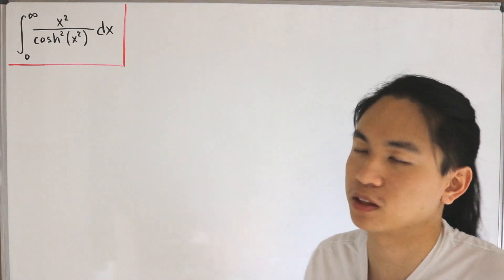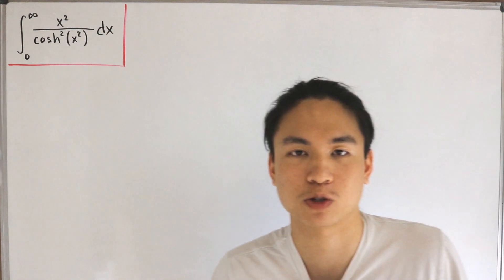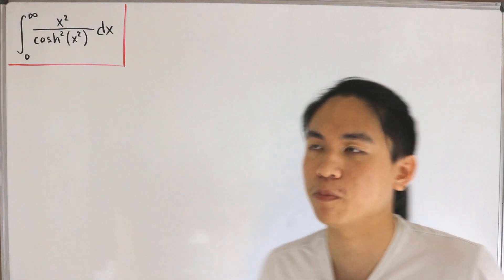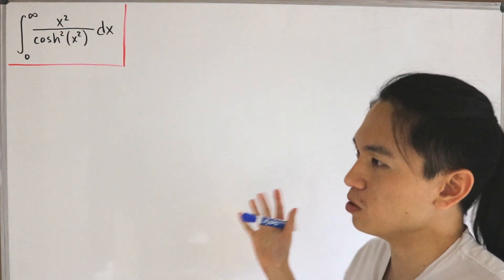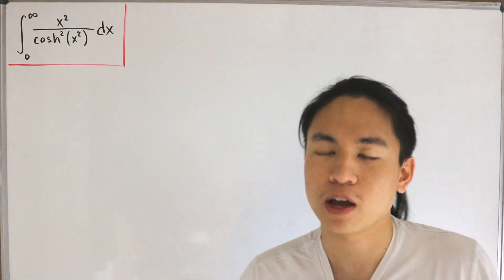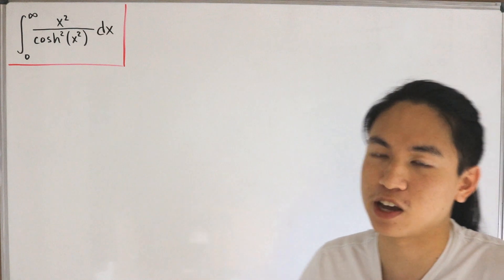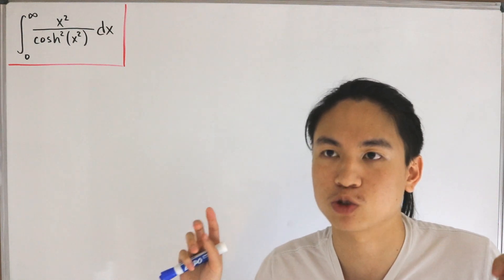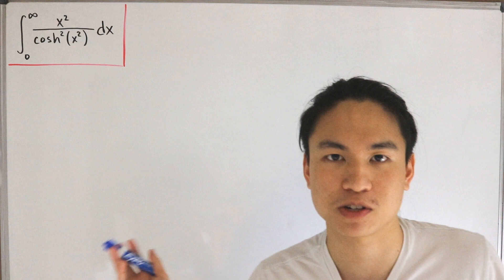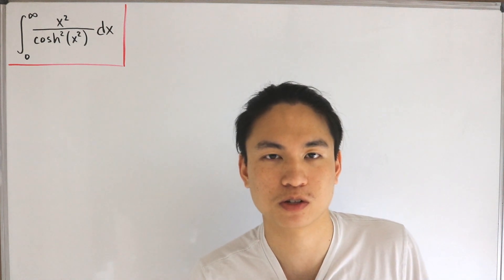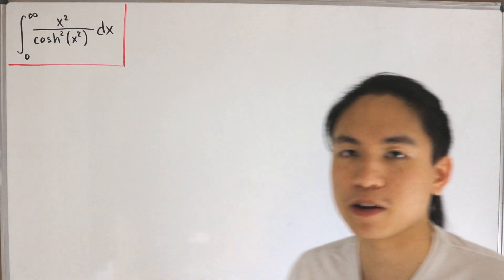At the end we'll actually be using special relations of a special function to help get the value we want. Our final answer can actually be solved to get one of the special forms — we'll get to what that is once we're near to that, so let's just jump right in.